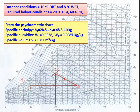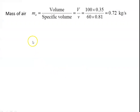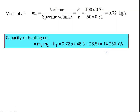Properties from the chart: h1 = 28.5, h2 = 48.3 kJ/kg. Specific humidity: w1 = 0.0058, w2 = 0.0085 kg/kg of air. Specific volume v1 = 0.81 cubic meter per kg. Mass of air = 100 × 0.35 / (60 × 0.81) = 0.72 kg/s.